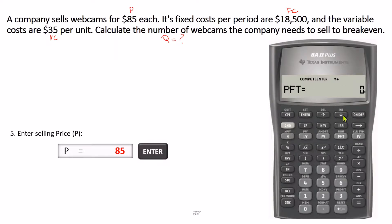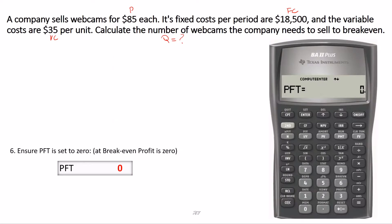Next, we move on to PFT. PFT represents the profit. At break-even, profit is zero. Therefore, we're going to make sure that profit is set to zero. When you clear the worksheet, the profit will be set to zero anyway, but it is good to make sure that this is zero.